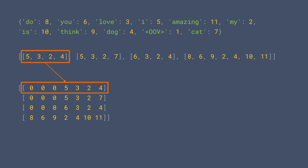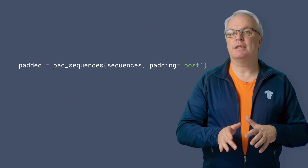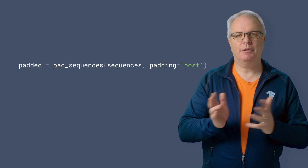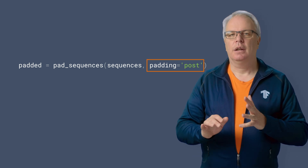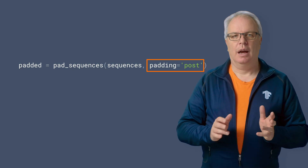Well, why is that? It's because our longest sentence had seven words in it. So when we pass this corpus to pad_sequences, it ensures all of the sentences have equally sized sequences by padding them with zeros at the front. Note that OOV isn't zero — it's one. Zero means padding. Now, you might think that you don't want the zeros in front and you might want them after the sentence. Well, that's easy — you just set the padding parameter to post like this, and that's what you'll get.